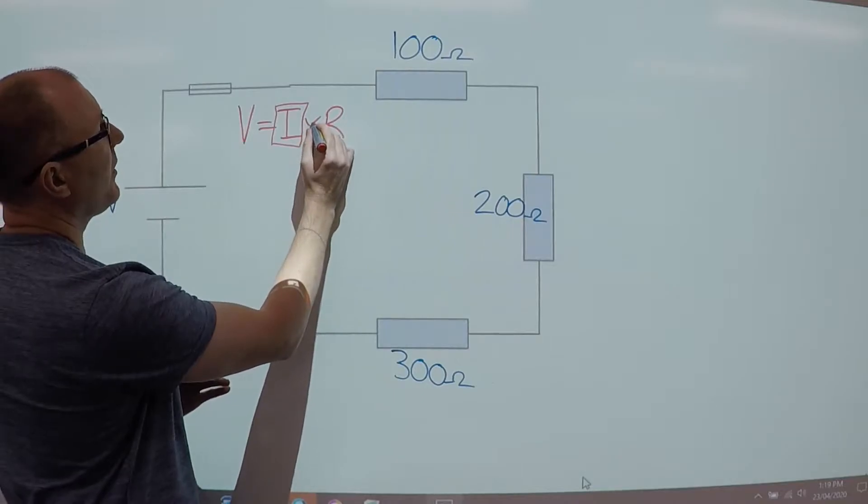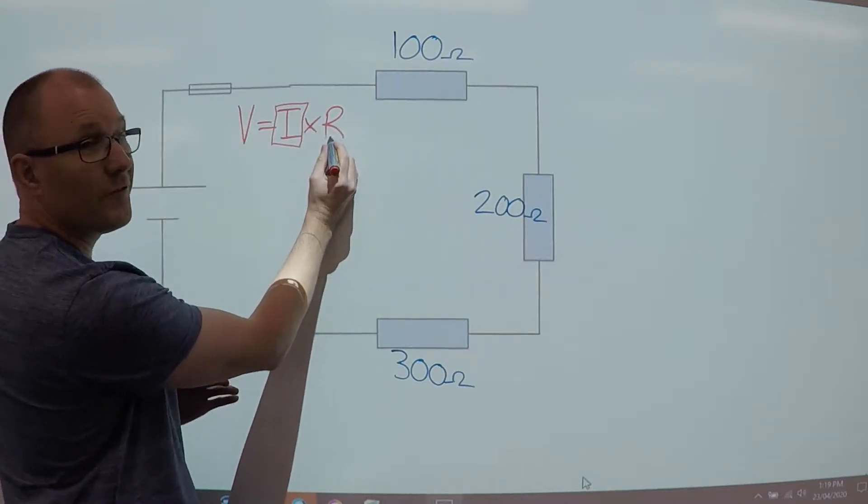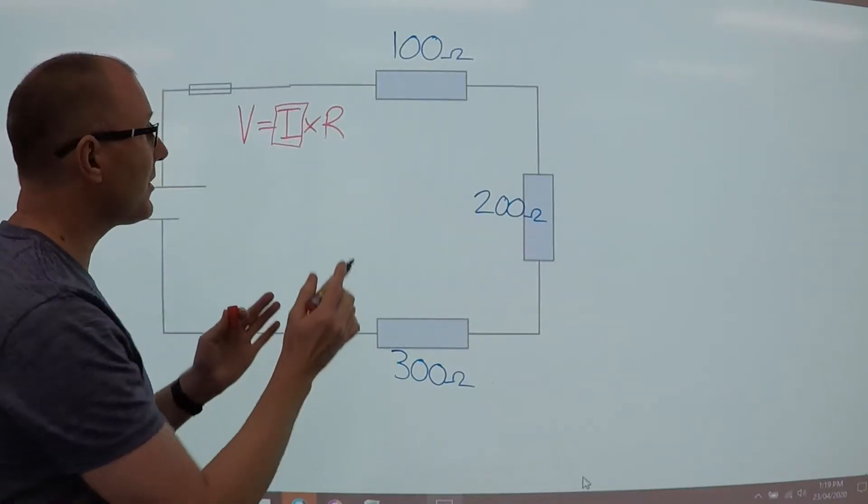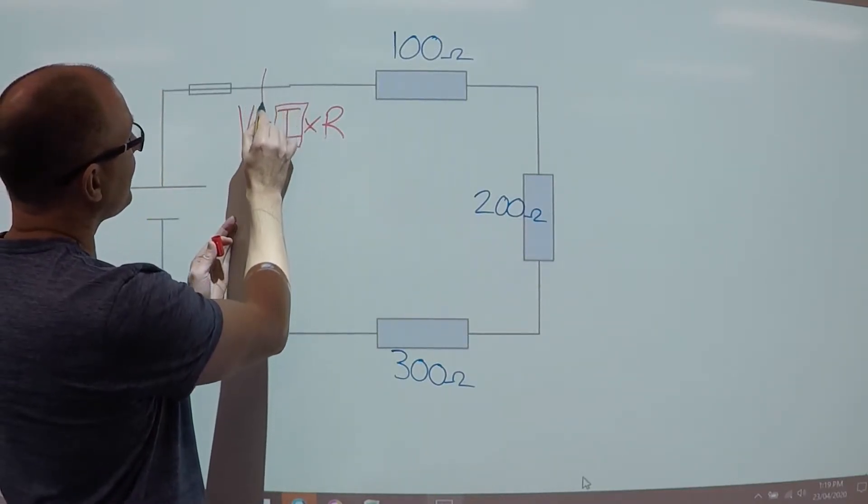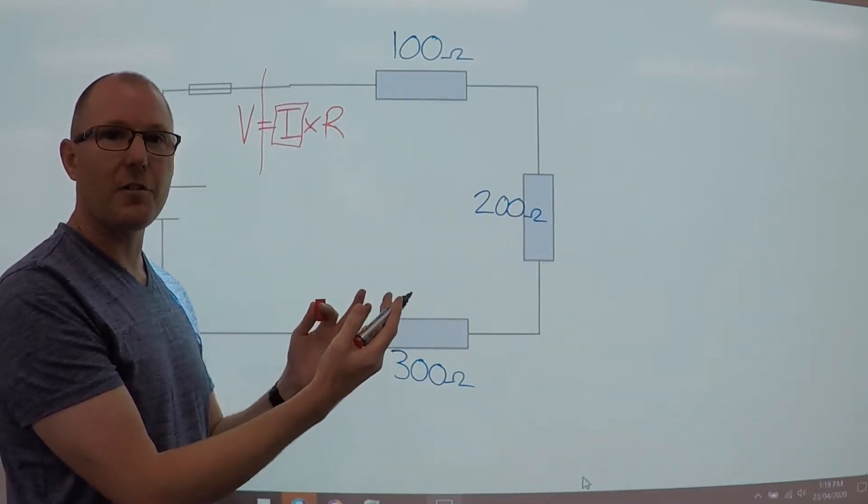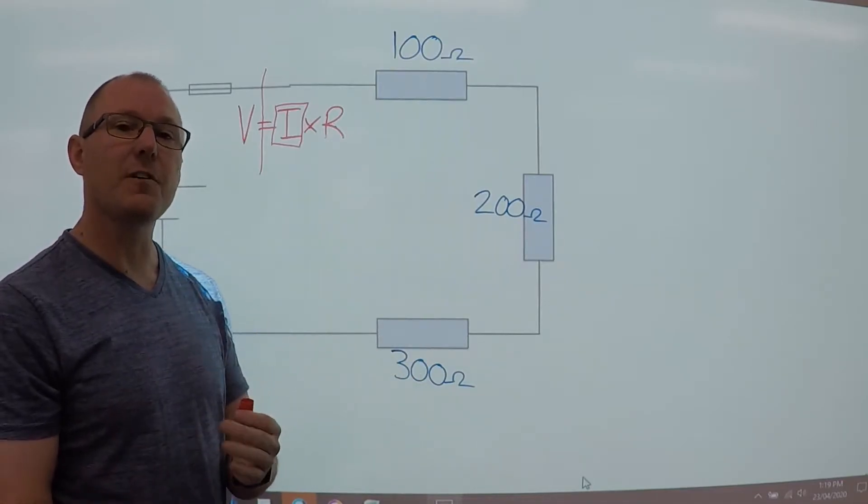Next, I know I have to move R across to the other side of the equation. And when I mean the other side of the equation, it's the other side of the equal sign. I'm multiplying the resistance on that side. So to move it over,